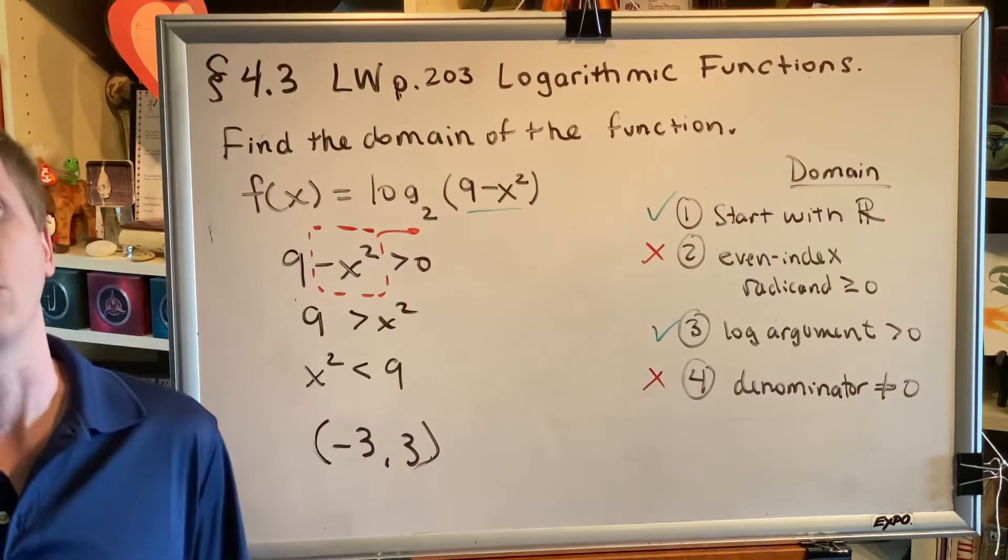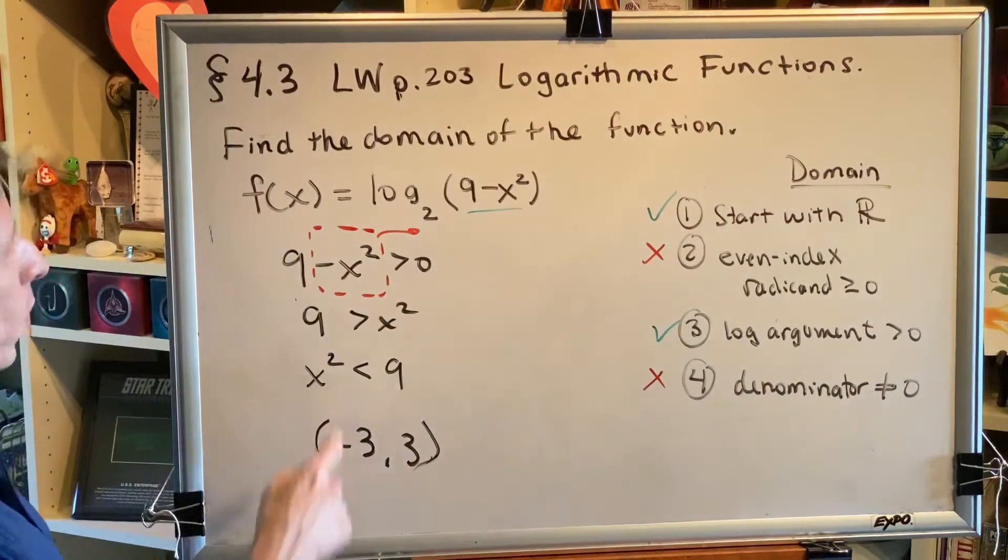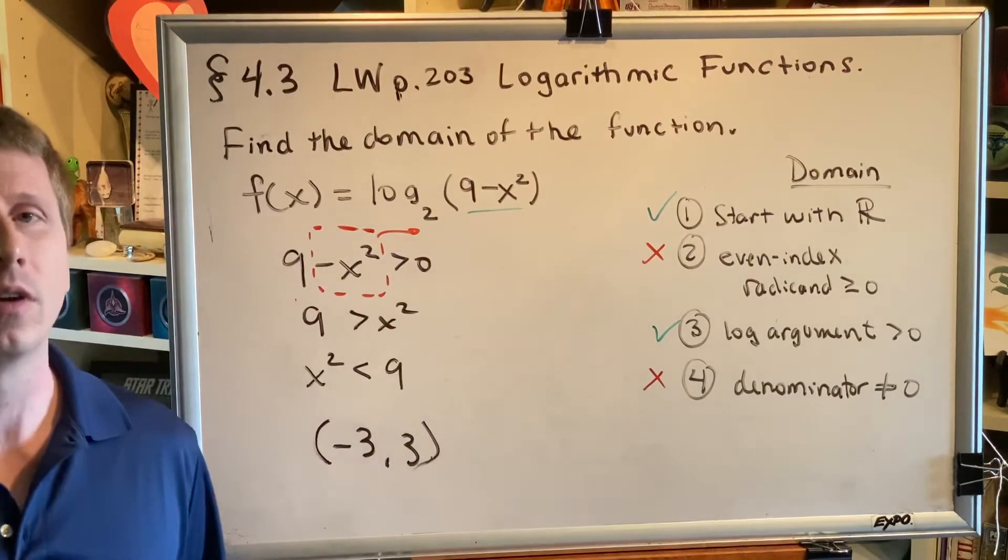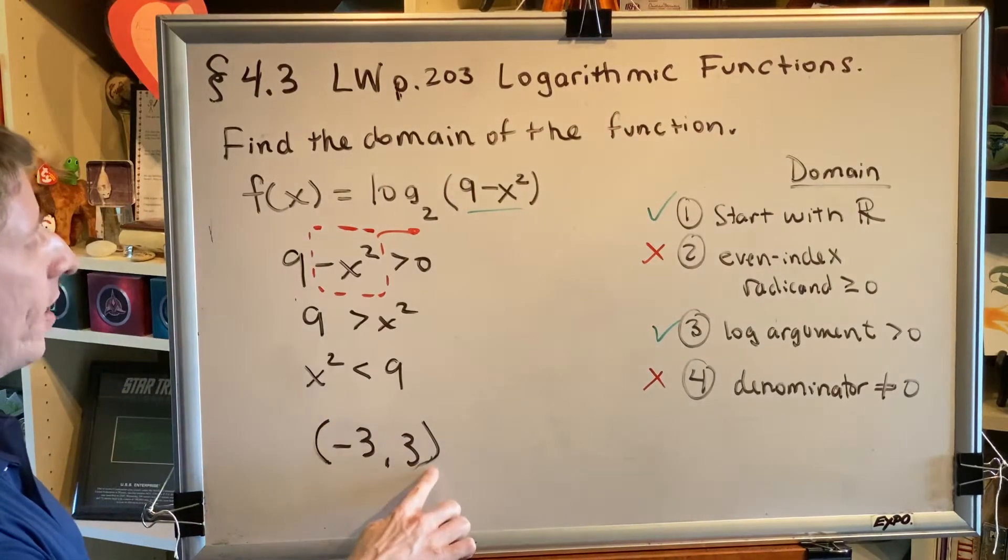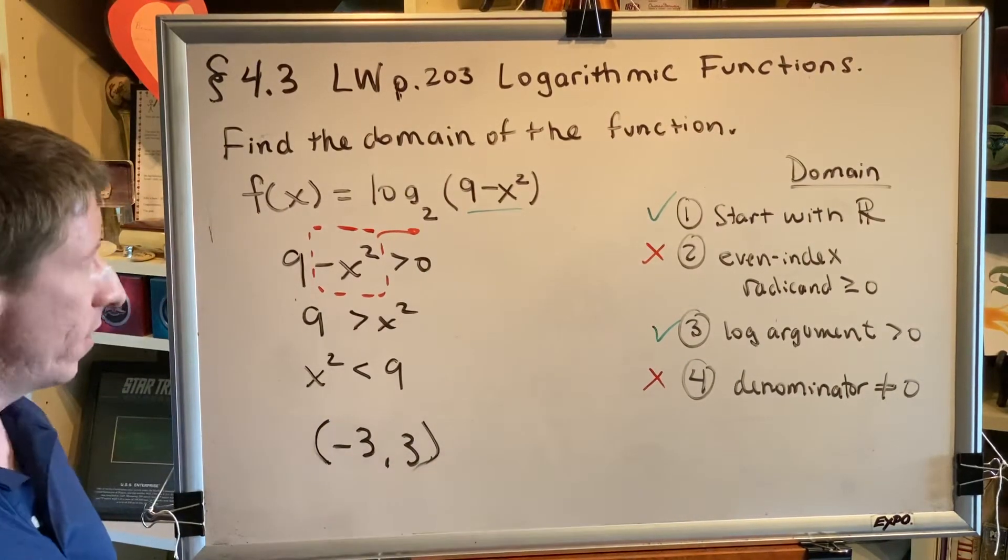Or negative 2, when you square it, you get 4, which is less than 9. But can we use 3 itself? Almost. 3 squared is exactly 9. We need it to be less than 9. So instead of a bracket at 3, we have a parenthesis.